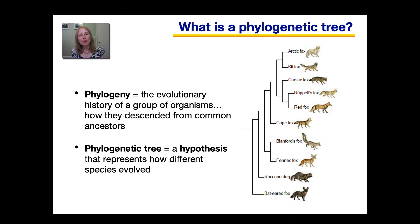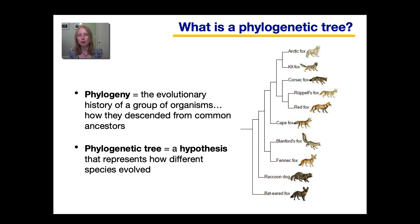So first let's talk about what we mean by the terms phylogeny and phylogenetic tree. A phylogeny is the evolutionary history of a group of organisms, such as this group of foxes shown in this diagram. And a phylogenetic tree is a visual hypothesis that represents our current understanding of how these species evolved and how they descended from a common ancestor.